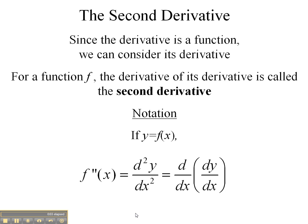We're talking about the second derivative. The second derivative is the derivative of the first derivative — it's the second derivative of the original function. So if y equals f of x, some notations we might use are f double prime of x, d squared y dx squared, or d dx of dy dx — the derivative of the first derivative.